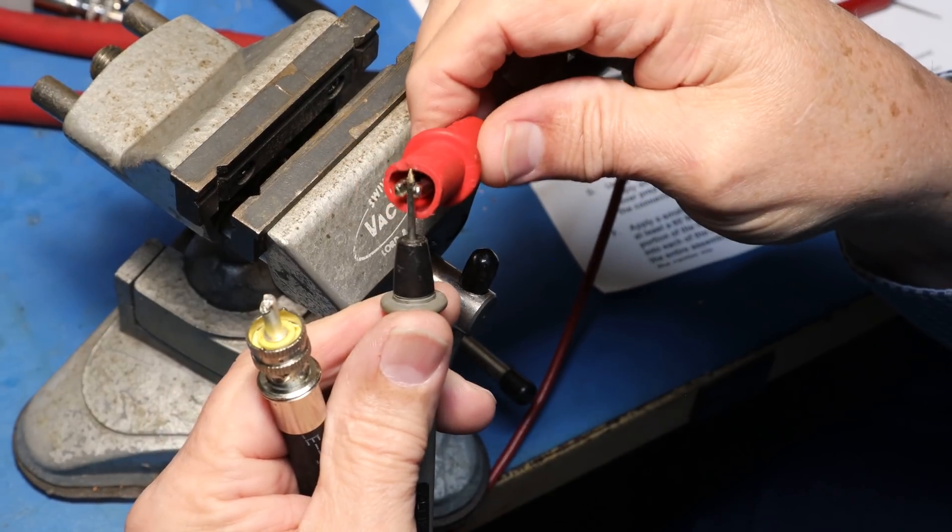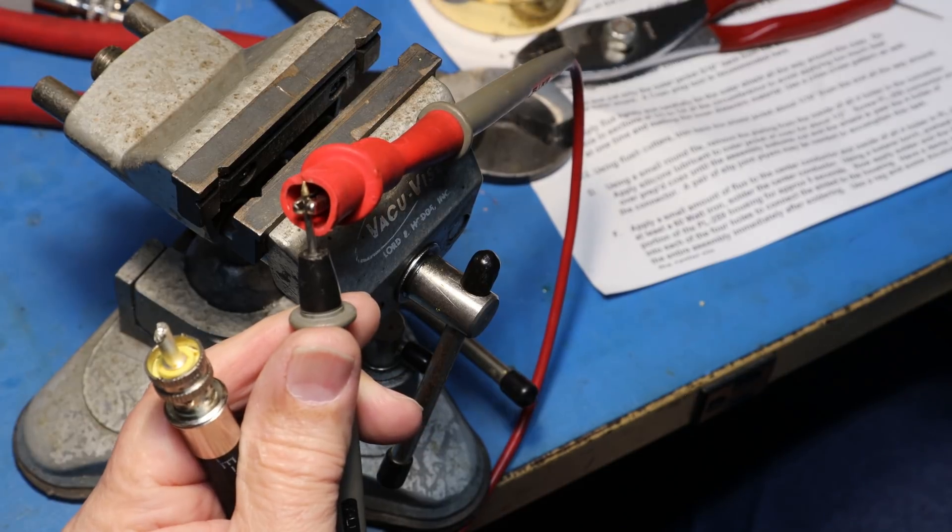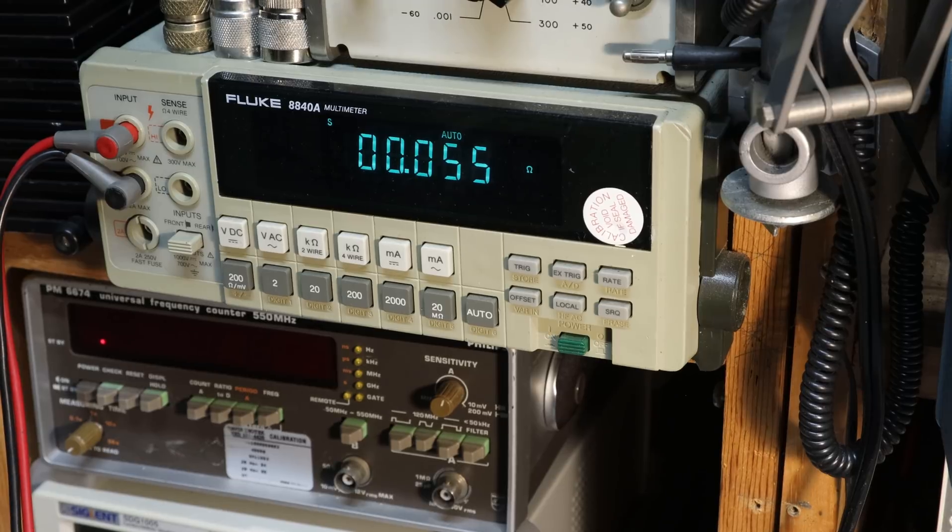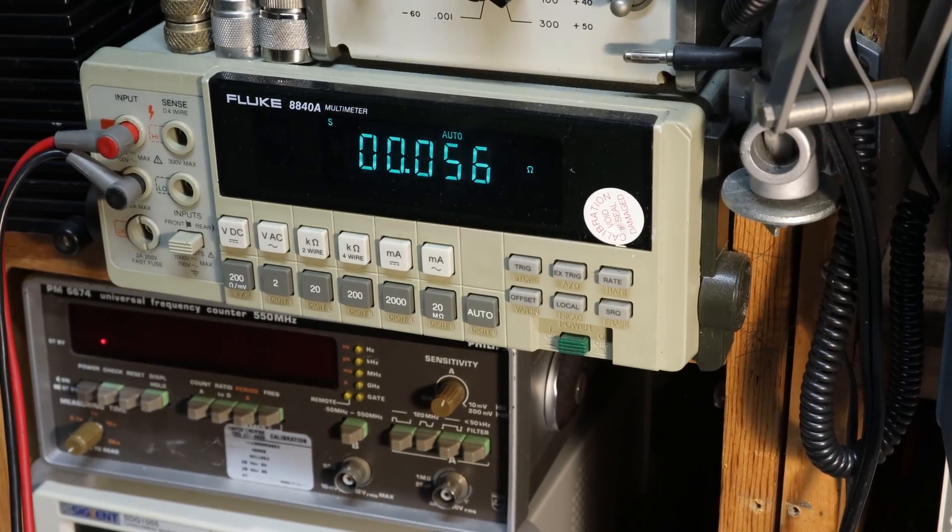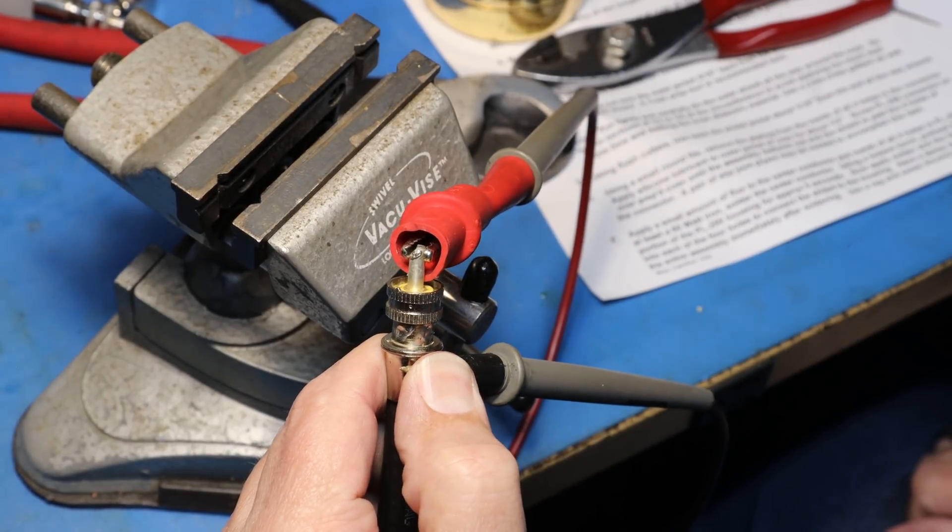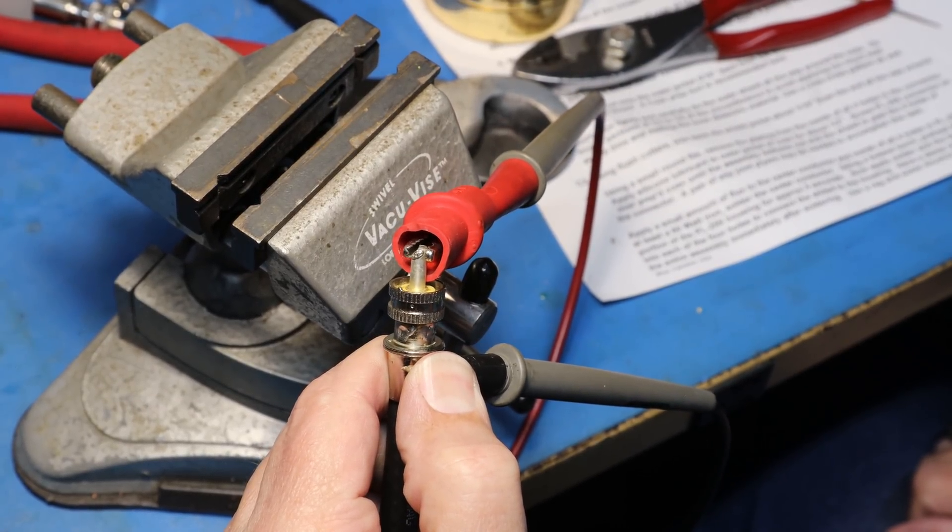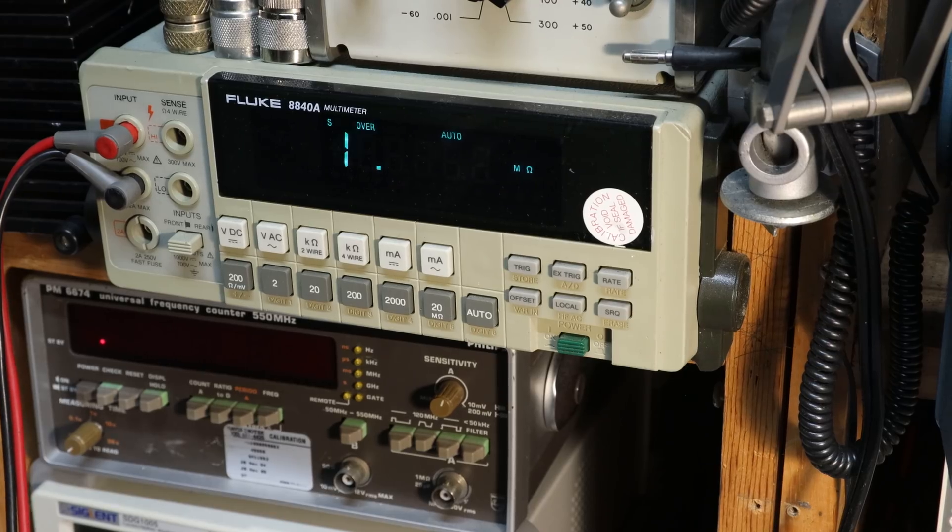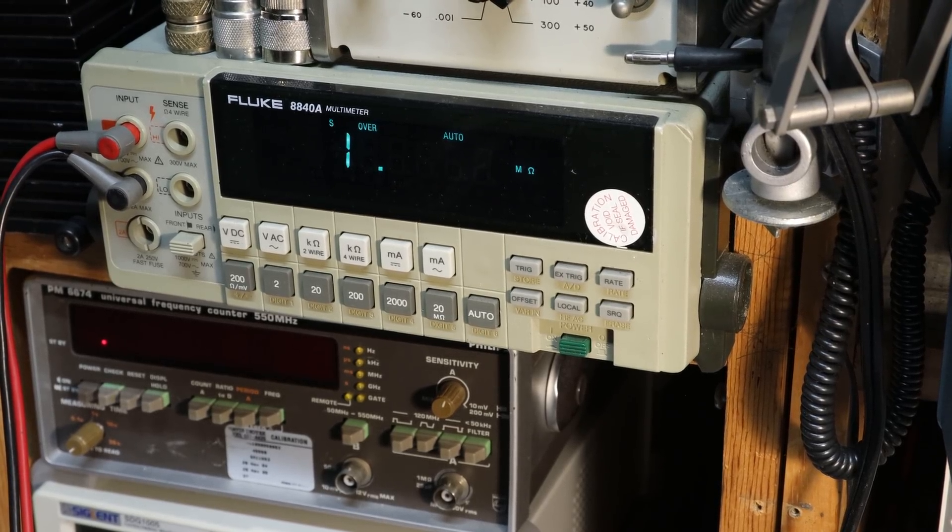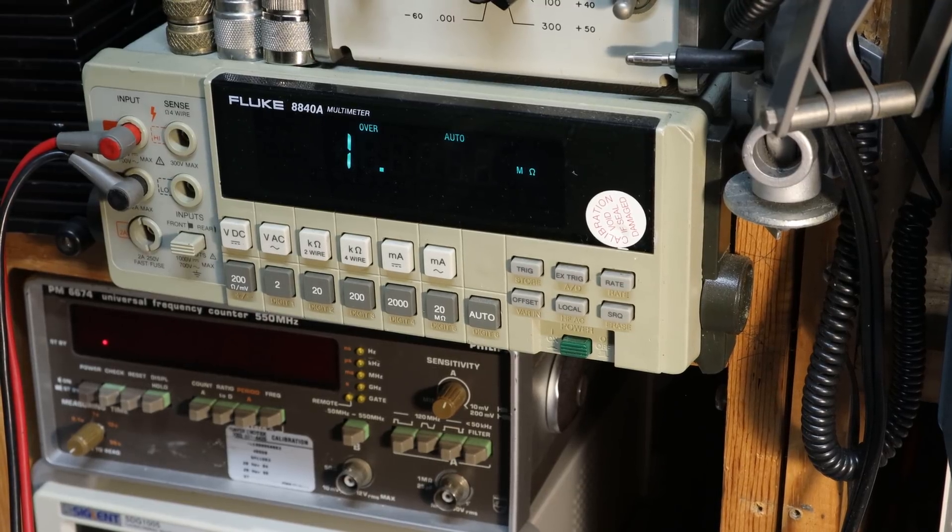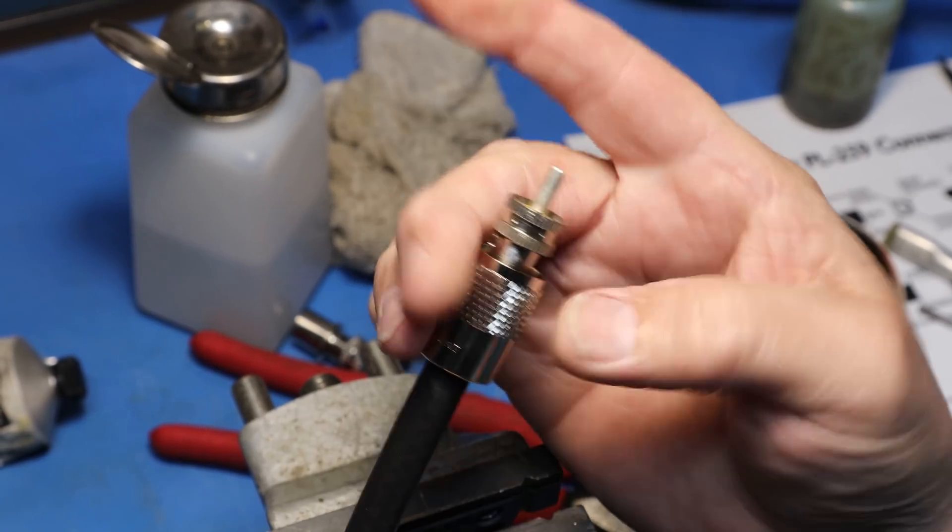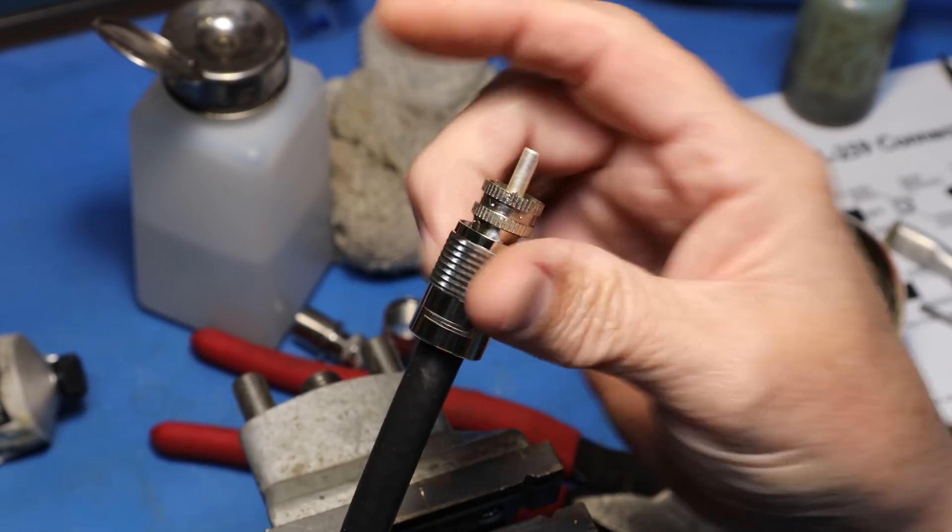Now it is time to test our connector. First, connect both meter leads of a digital multimeter together. This will help us verify and validate our leads are good and meter is in working condition. Next, we will take one lead and connect it to the center pin followed by one lead to the outer shield. Your meter should display a 1 or OL for open loop. This indicates there are no shorts in your connector. Finally, thread the barrel over the connector to complete the installation.